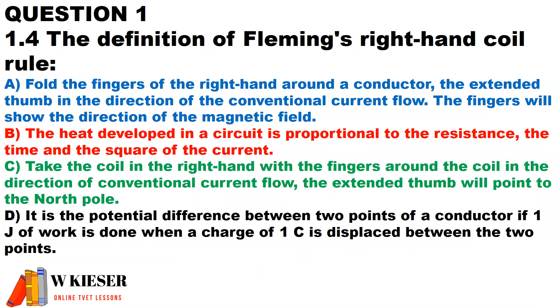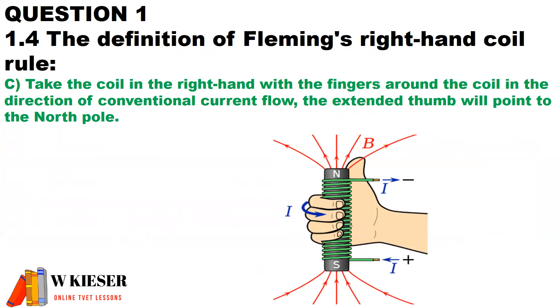In the following statement, the definition of Fleming's right-hand coil rule states that taking the coil in the right hand with the fingers around the coil in the direction of conventional current flow, the extended thumb will point to the north pole.